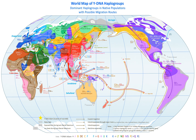A haplotype is a group of alleles in an organism that are inherited together from a single parent. A haplogroup is a group of similar haplotypes that share a common ancestor with a single nucleotide polymorphism mutation. More specifically, a haplogroup is a combination of alleles at different chromosomal regions that are closely linked and that tend to be inherited together.